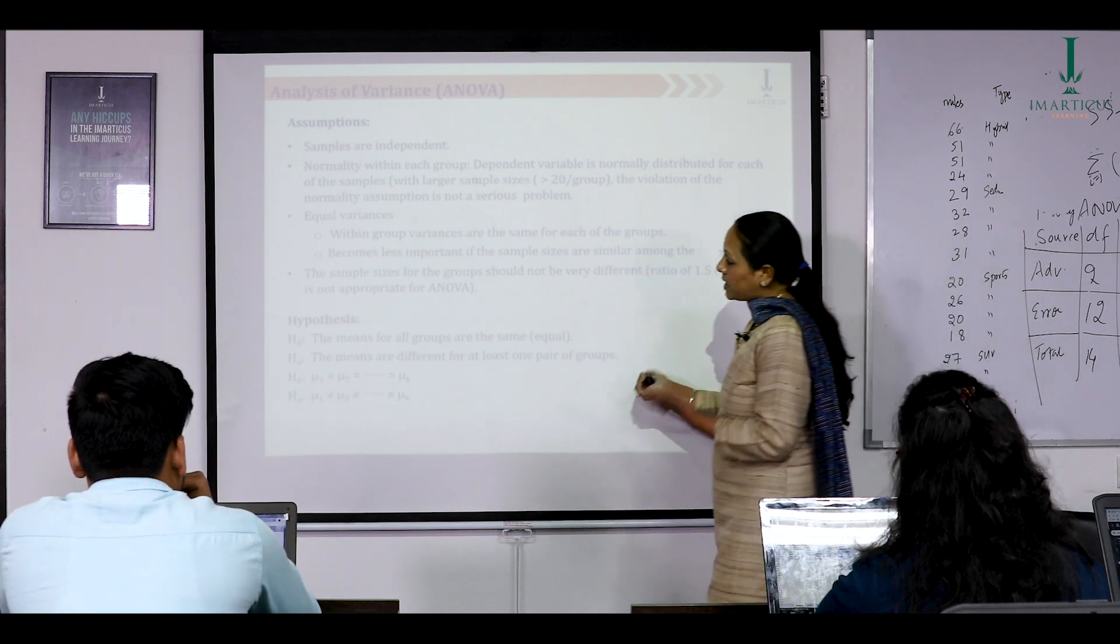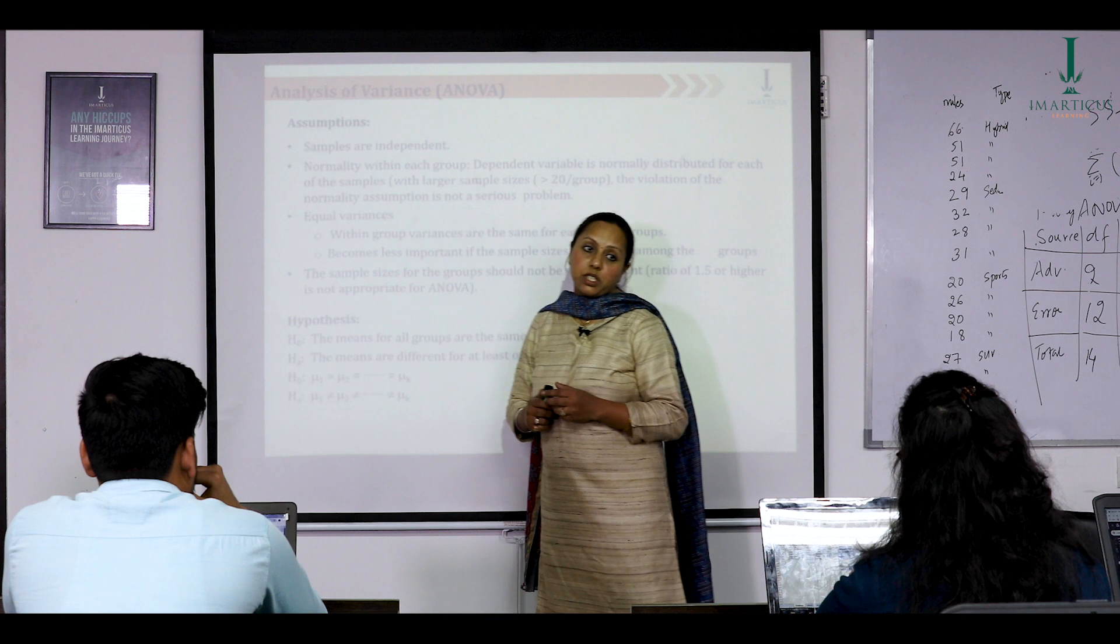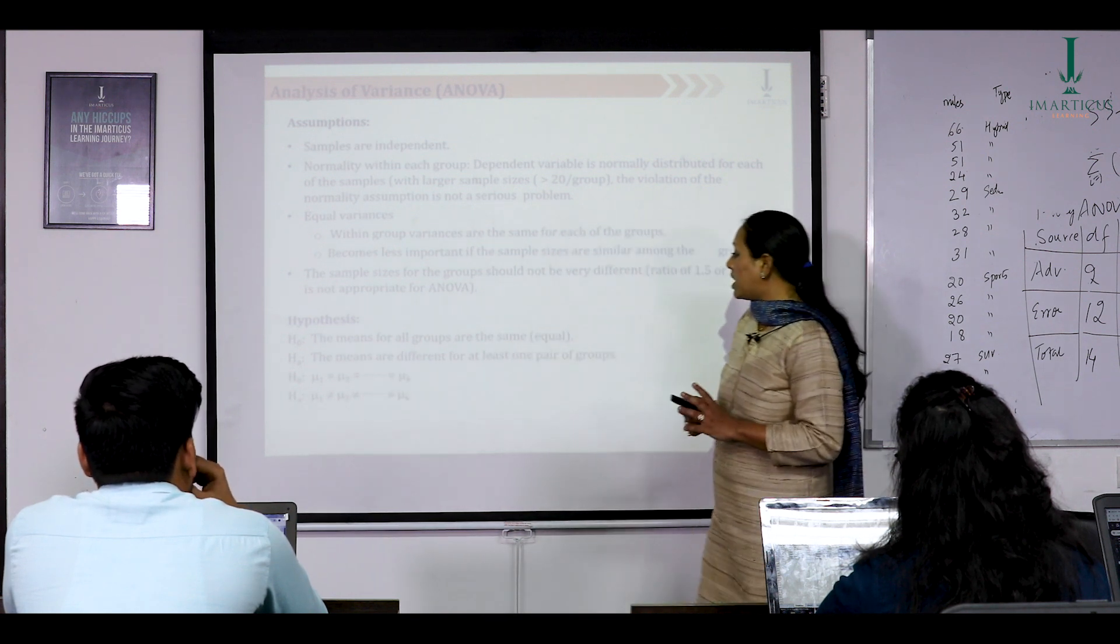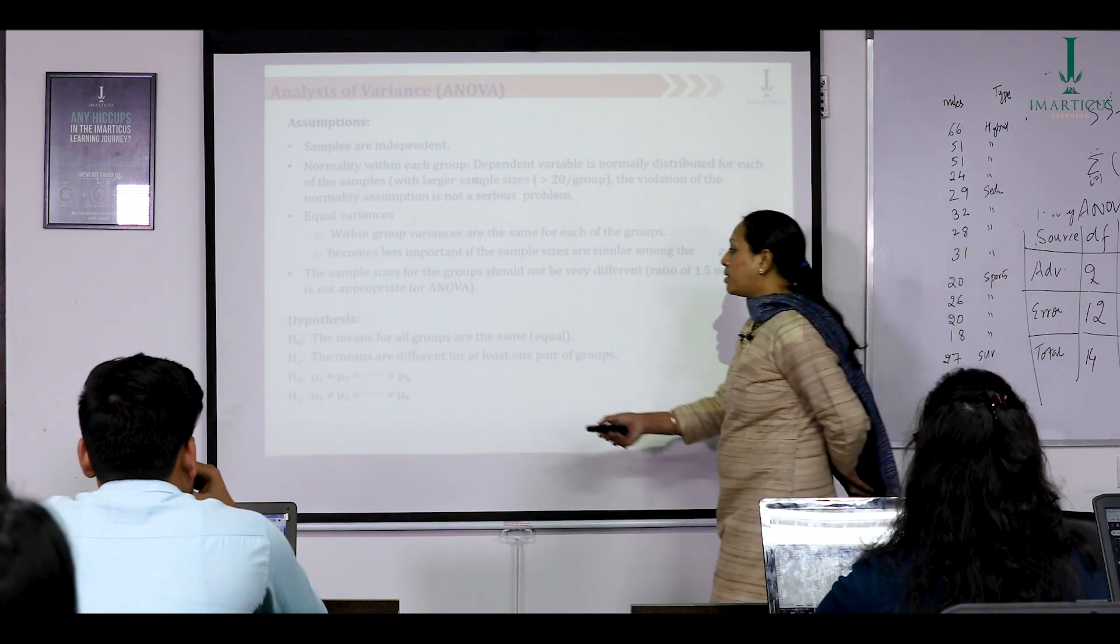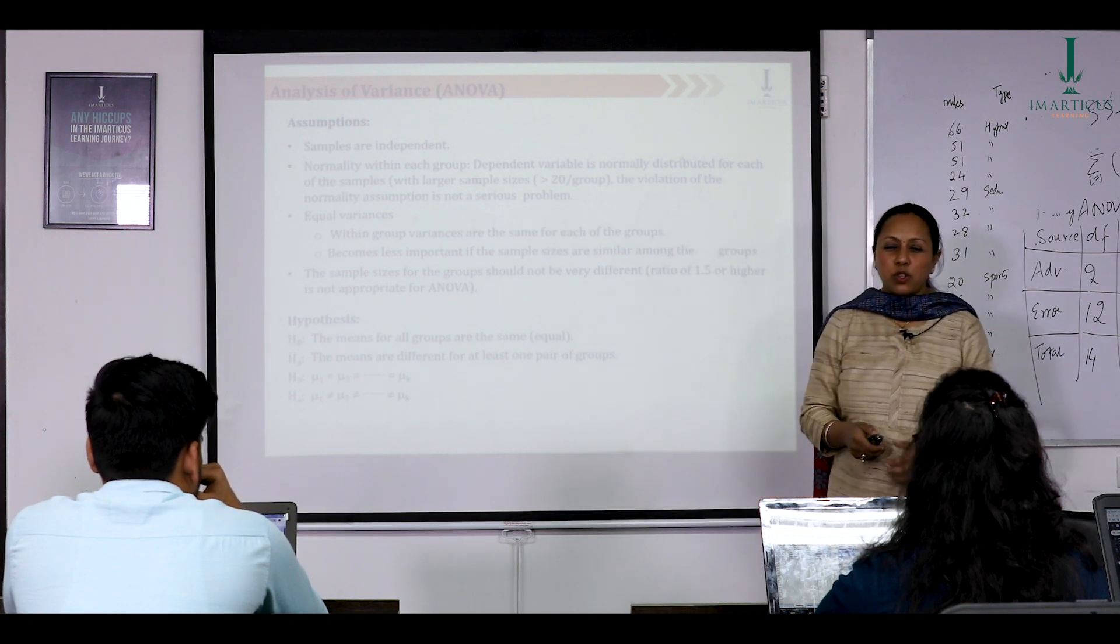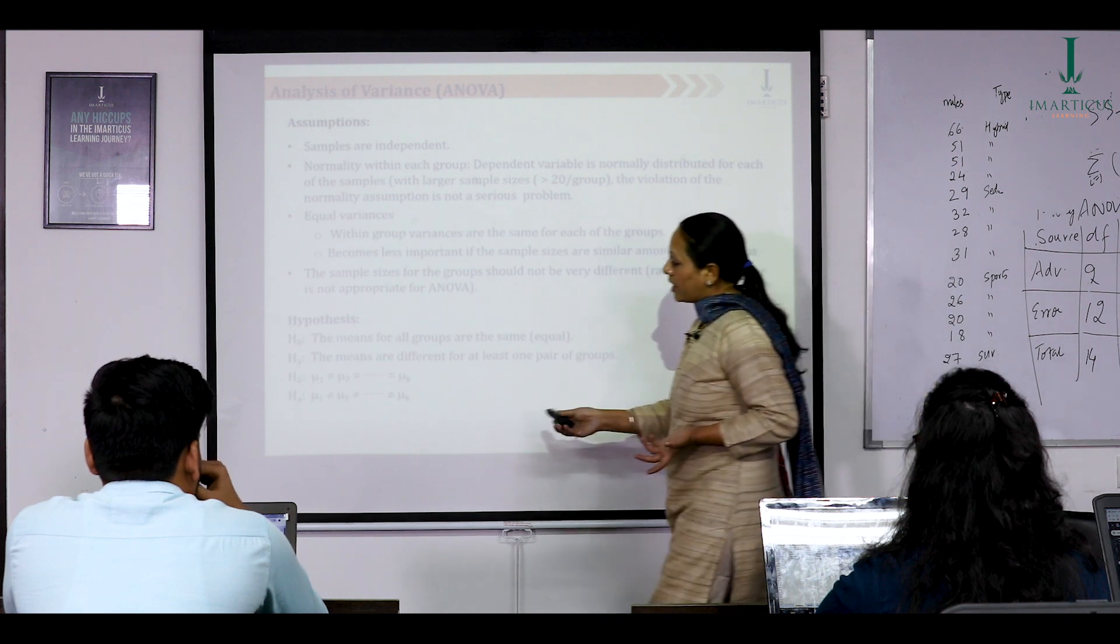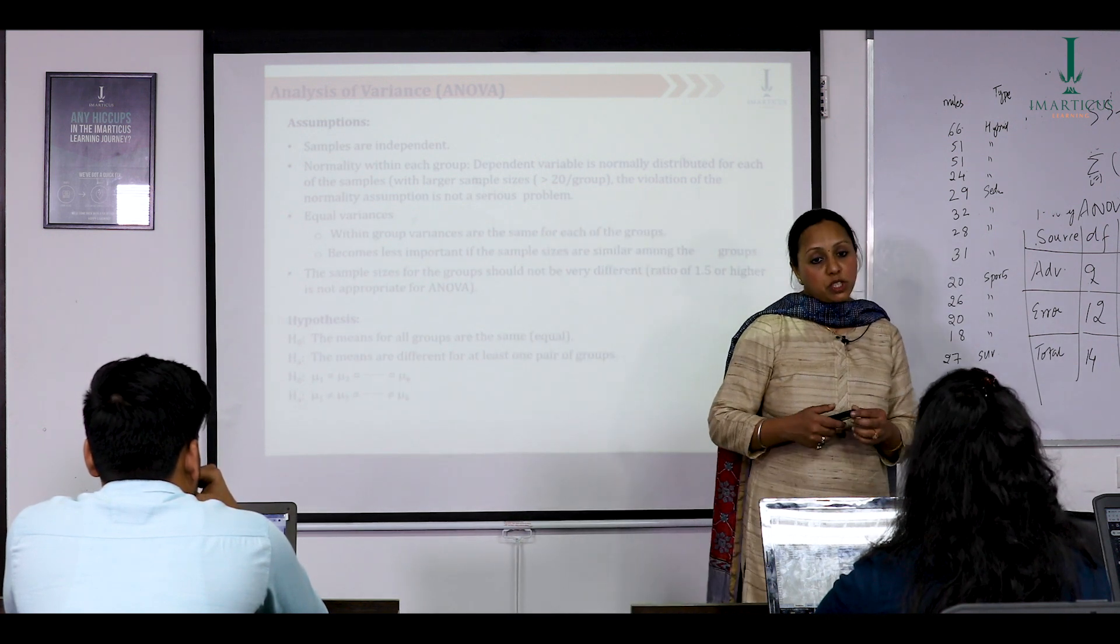So we start by establishing a level of significance alpha. Having done that, we have to write out our hypothesis, alternate hypothesis and null hypothesis. The alternate hypothesis is that the means are different for at least one pair of groups. Null hypothesis says that the means for all groups are the same, the omnibus. And if you notice, we are using mu and not x bar, mu because it's for population parameter, population mean.